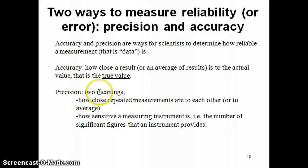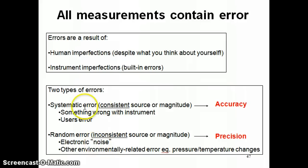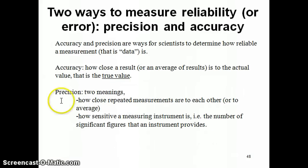Precision, on the other hand, is a little bit more complicated. It's also a measure of reliability, but it has two meanings. The first is: if you're making repeated measurements, how close are those repeated measurements to each other? Ideally, if I try to determine the mass of an orange and put it on the balance 10 times, I should get the same mass every time. But because of random and systematic errors — errors from the user and errors from electronic noise or pressure differences in the room — you might not get the same number every time. How close these numbers are to each other tells you how precise your measurement is.